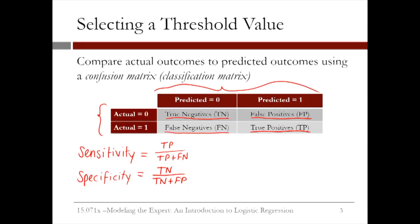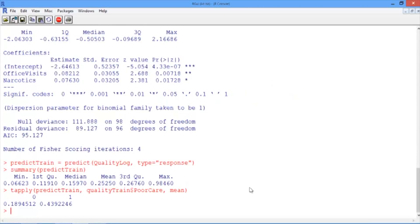A model with a higher threshold will have a lower sensitivity and a higher specificity. A model with a lower threshold will have a higher sensitivity and a lower specificity. Let's compute some confusion matrices in R using different threshold values. In our R console, let's make some classification tables using different threshold values and the table function. First, we'll use a threshold value of 0.5.